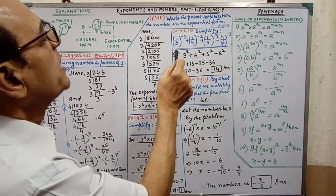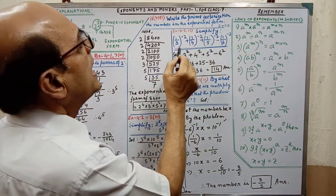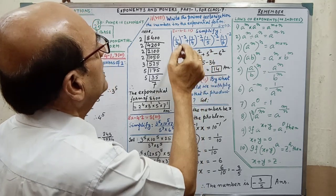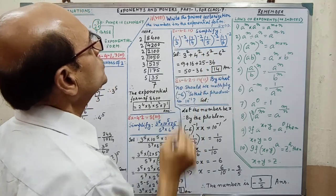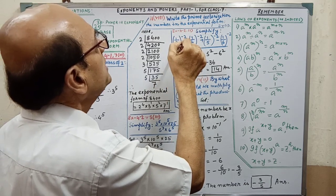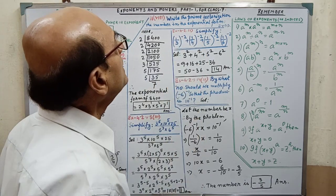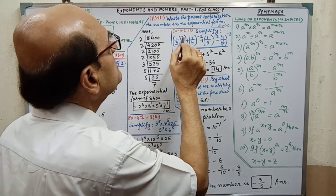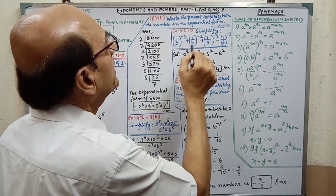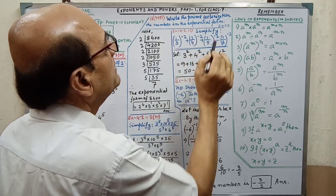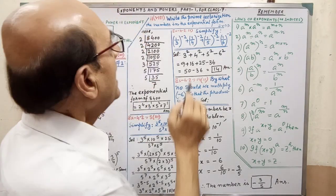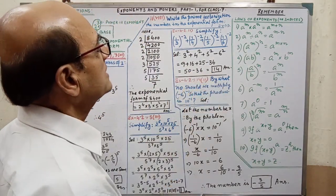Next sum: simplify. You must copy the sum first, then start solving. We have 1 by 3 whole to the power minus 2. When you take the reciprocal, the power sign changes: minus 2 becomes plus 2. The reciprocals become 3 by 1, 4 by 1, and 5 by 1. Simplifying, you will get the answer, which is 4.